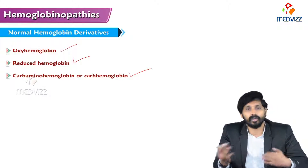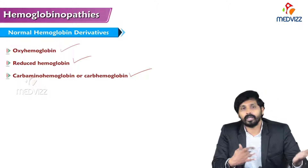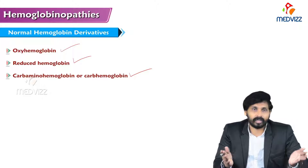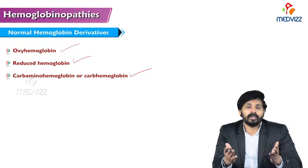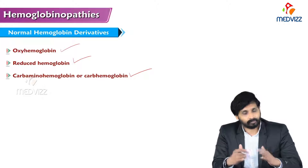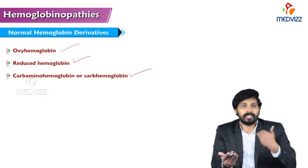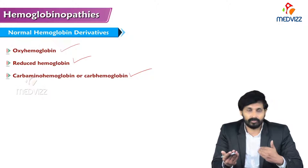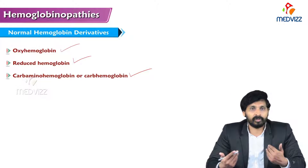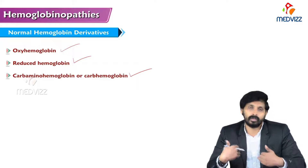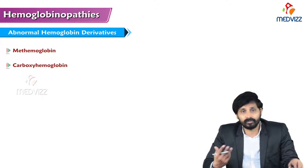Normal hemoglobin derivatives include oxyhemoglobin, reduced hemoglobin, and carbamino hemoglobin. These involve the normal loading and unloading of oxygen at the lungs and peripheral tissue. Oxyhemoglobin carries oxygen from lungs to tissues. Reduced hemoglobin has hydrogen ions attached and is useful for the buffering activity of hemoglobin at peripheral tissue. Carbamino hemoglobin takes up carbon dioxide and exports CO₂ from the lungs.